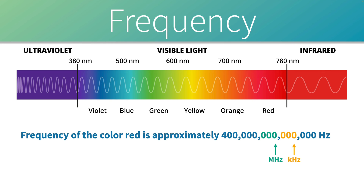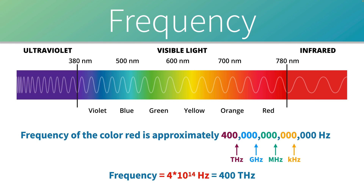To understand the scale: thousands of cycles per second is kilohertz, millions is megahertz, billions is gigahertz, and trillions is terahertz. The color red has a frequency of approximately 400 terahertz, written as 4 × 10¹⁴ Hz. When sending light through a fiber optic cable, we often use wavelengths toward the red or infrared end of the spectrum. Ultraviolet has shorter wavelengths and higher frequencies, but higher frequencies attenuate faster through the impurities — called dopants — in the fiber, so we veer toward longer wavelengths to sustain the signal as long as possible.